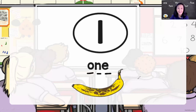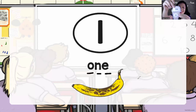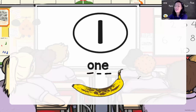One! Yes — O-N-E. One. Now, where is your number word one? O-N-E. One. Put it on the table. One, one, one. O-N-E. One.